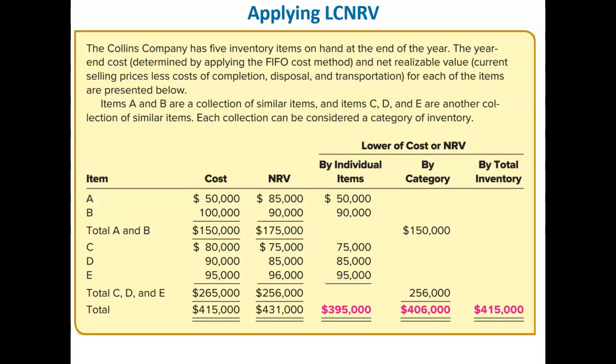For financial reporting purposes, lower of cost or net realizable value can be applied to: A. individual inventory items, B. major categories of inventory, or C. the entire inventory. The example here demonstrates the lower of cost or net realizable value approach with each of the three possible applications.